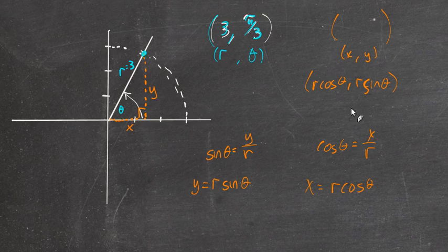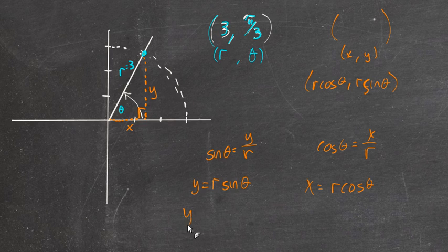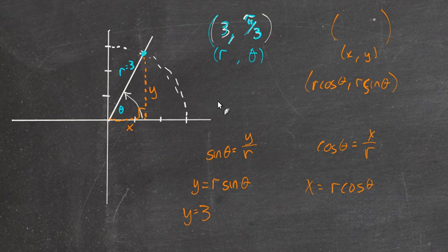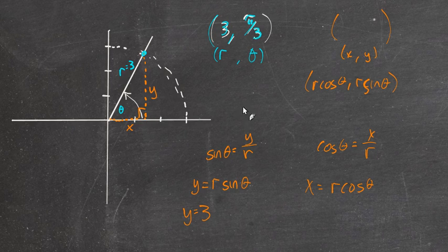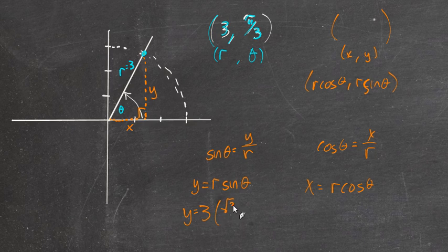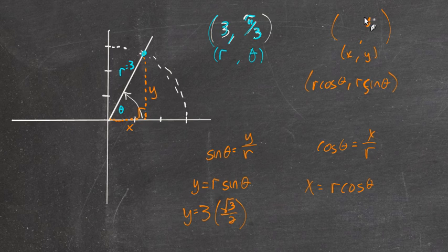So for this point, we'll get into specifically this example. For this one, y is equal to 3 times the sine of θ. We should be pretty good with our unit circles by memory even, by now. So the sine of π/3 is going to be √3/2. Multiply this by √3/2. That's the y value: 3√3/2.